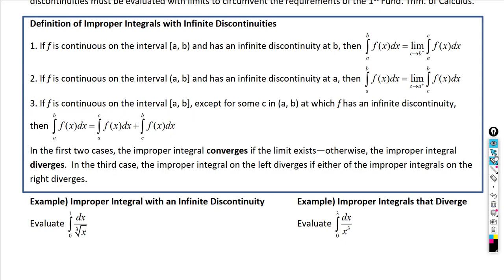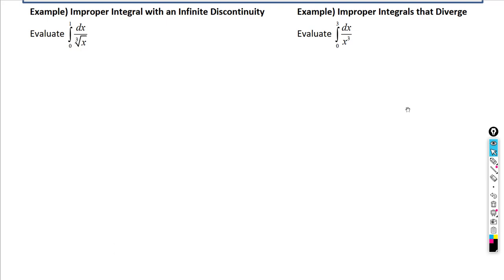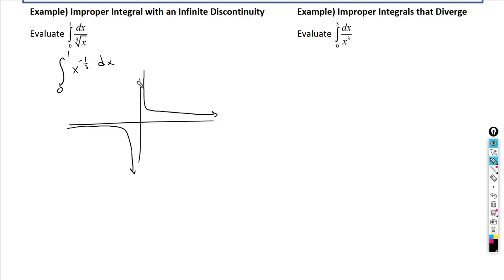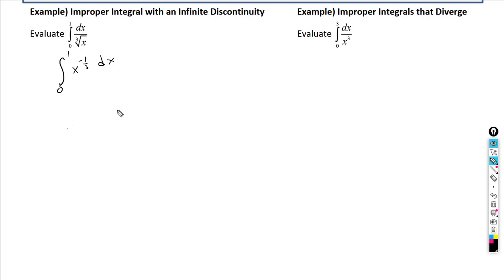Example one: the integral from 0 to 1 of dx over the cube root of x, rewritten as x to the negative 1/3. We need to recognize that the graph has a vertical asymptote at x = 0, so x = 0 is an infinite discontinuity. Since 0 is our lower bound, we can't just plug it in.